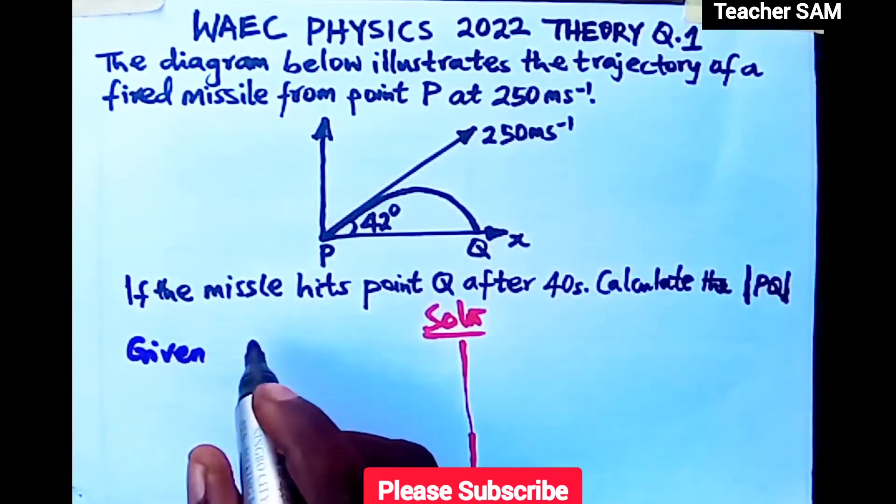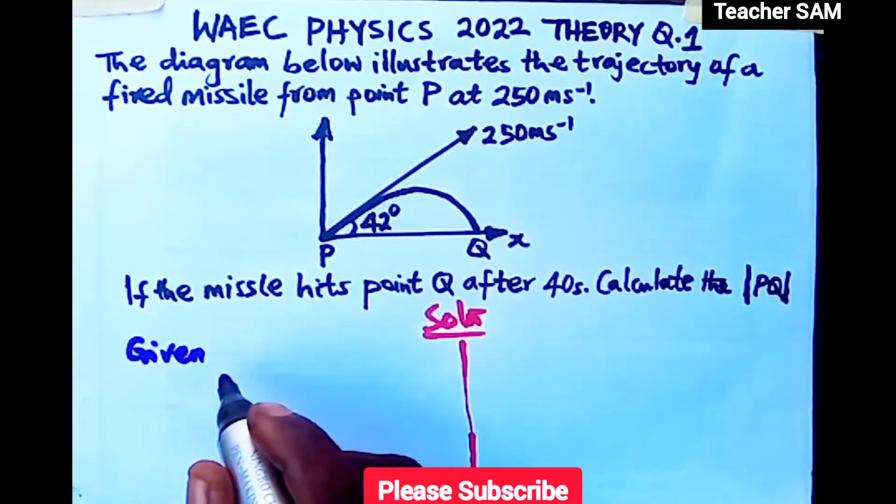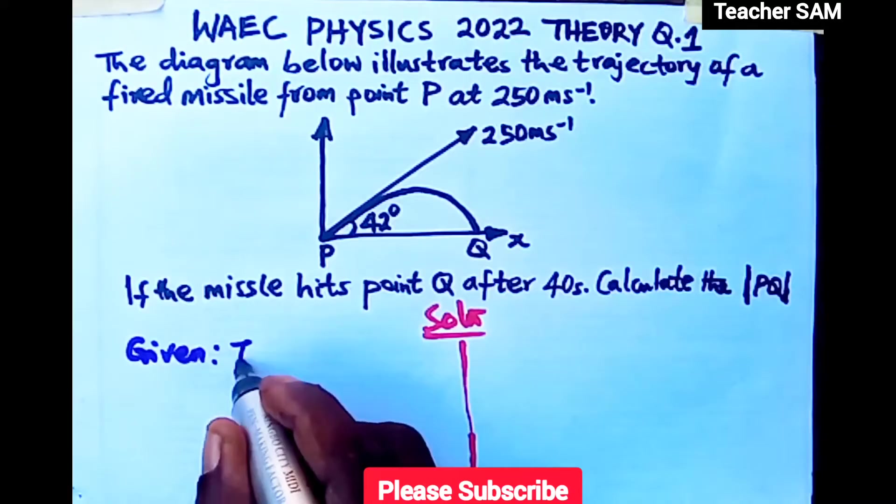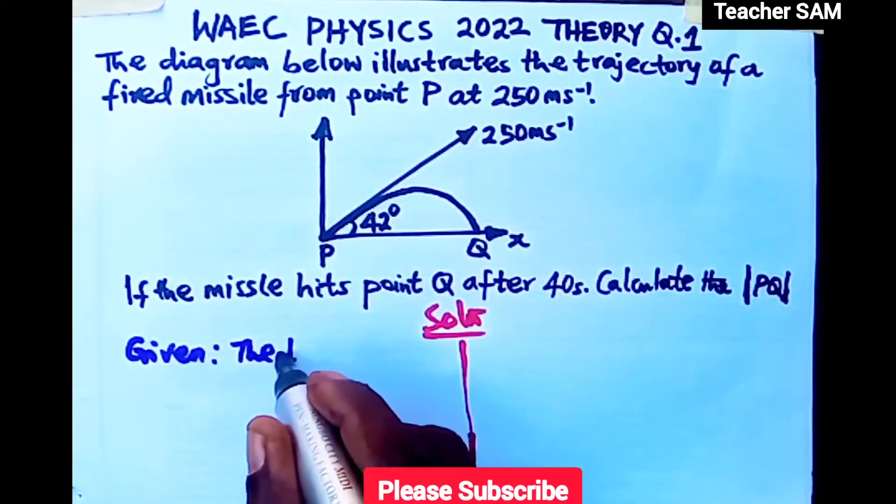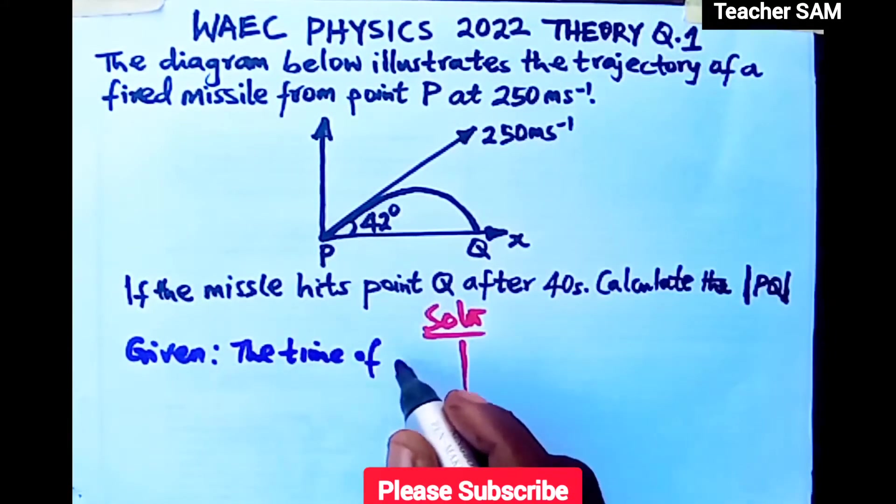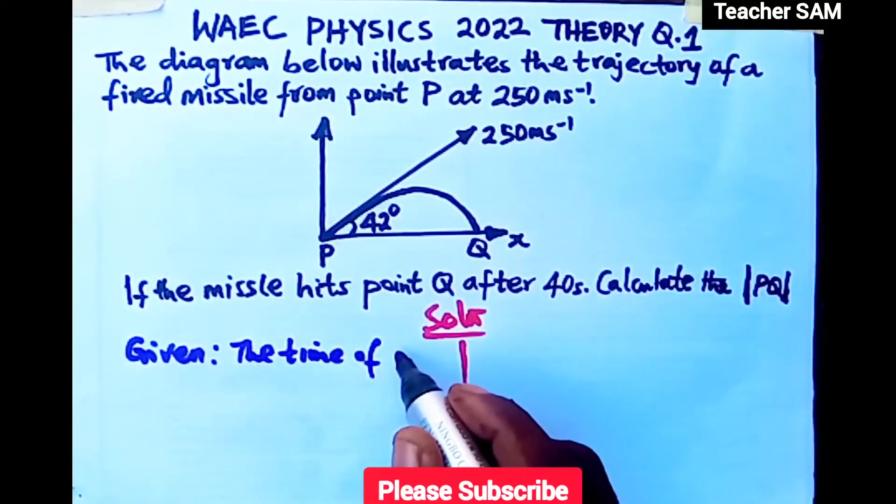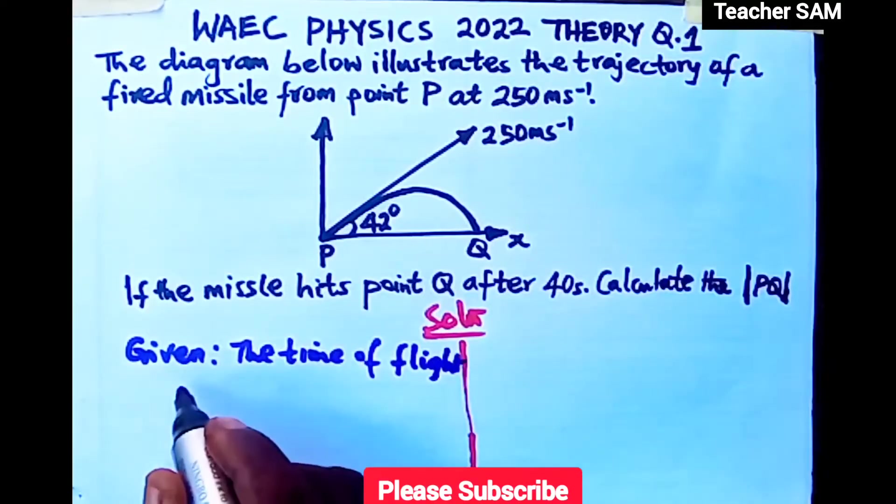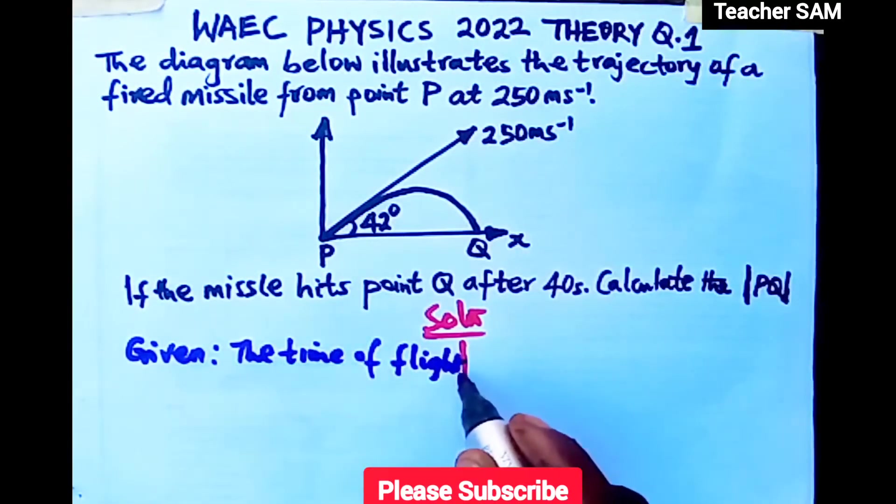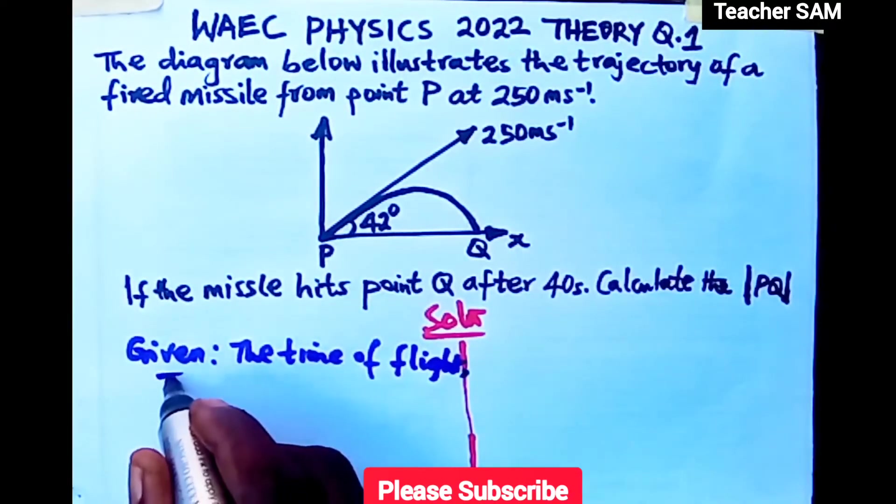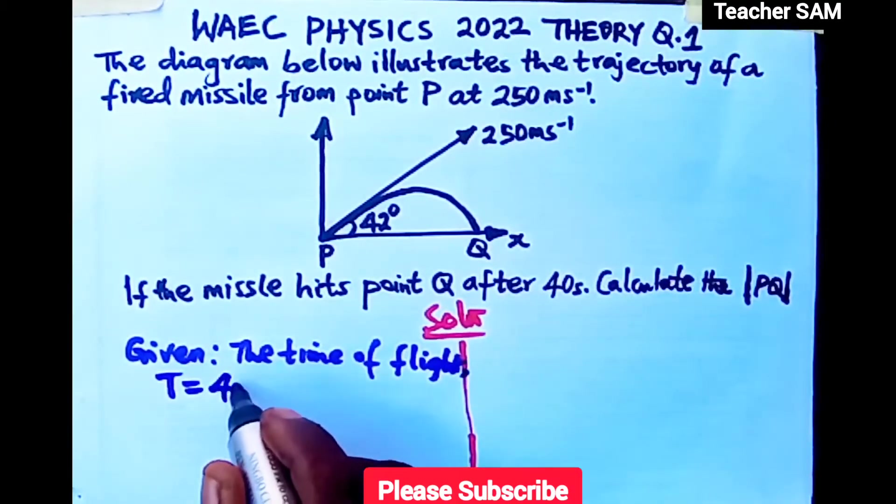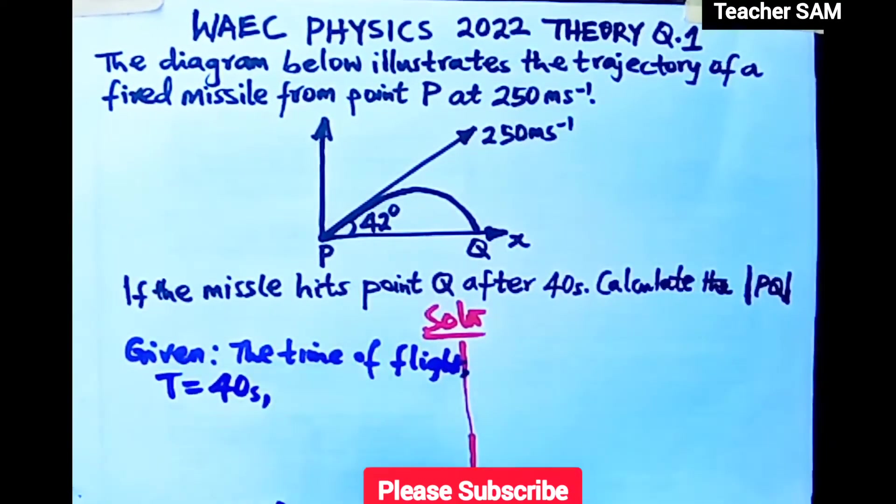Given: the time of flight T equals 40 seconds from the equation.